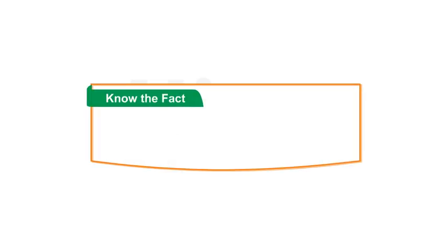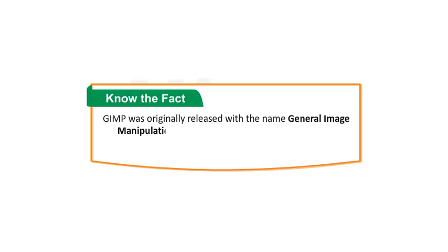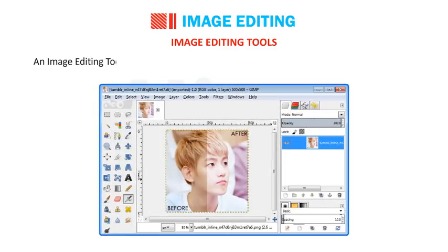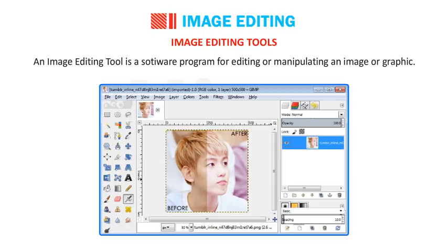GIMP was originally released with the name General Image Manipulation Program, which later changed to GNU Image Manipulation Program when it was incorporated in the GNU project. An image editing tool is a software program for editing or manipulating an image or graphic.